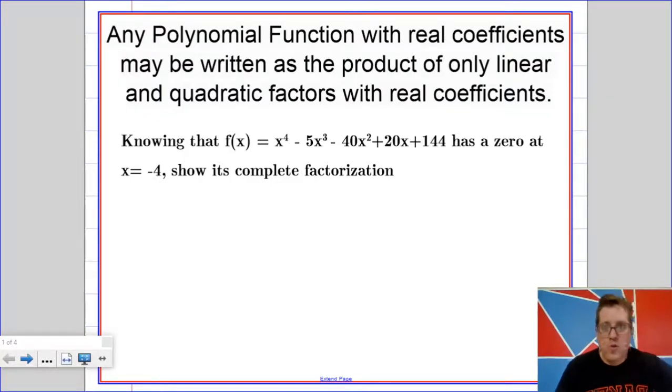Okay, so I'm going to introduce a new theorem, which you can see at the top of the screen, but before we do that we're just going to talk about working through a problem. So knowing that this function has a zero, and remember that means this x value will make this output zero at x equals negative 4, show its complete factorization.